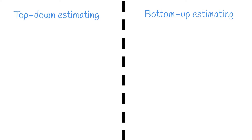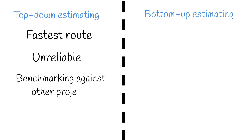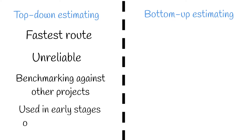Project estimating can be split into two camps: top-down estimating and bottom-up estimating. Top-down estimating is the fastest route for cost estimation; however, it is also considered the most unreliable. It utilises benchmarking against other projects to form a cost estimate. A top-down approach is often used in the very early stages of a project, and provides a tool for early decision-making.